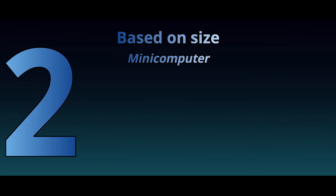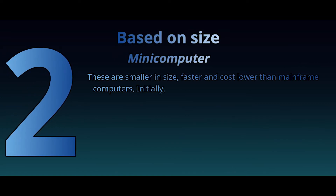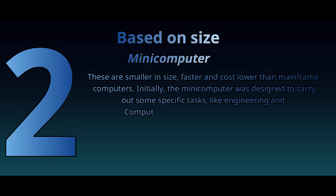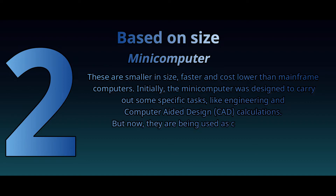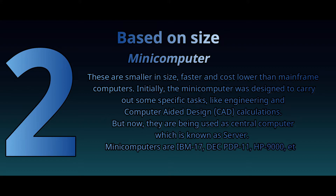6. Mini computer: These are smaller in size, faster, and cost lower than mainframe computers. Initially, the mini computer was designed to carry out some specific tasks, like engineering and computer-aided design calculations. But now, they are being used as a central computer, which is known as a server. Many examples are IBM 17, DEC PDP 11, HP 9000, etc.